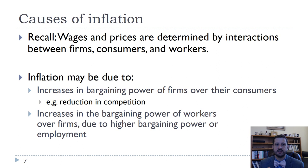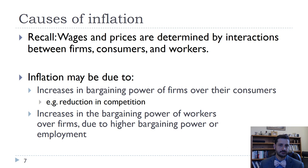When we think about the causes of inflation, we want to go back to how prices and wages are determined. Remember that in Chapter 6 and Chapter 7, we looked at both how firms determine their prices and how the interaction between firms and workers determines workers' wages. Firms will increase prices when they believe it is in their profit-maximizing interest, and workers will bargain for the highest wage that they can, which will depend on things like the unemployment rate.